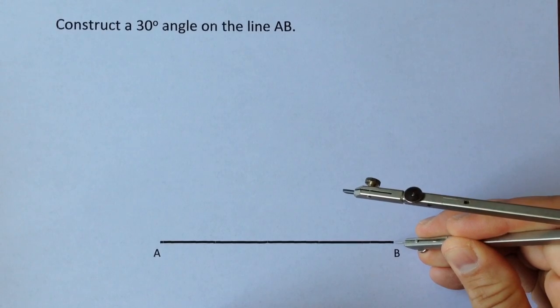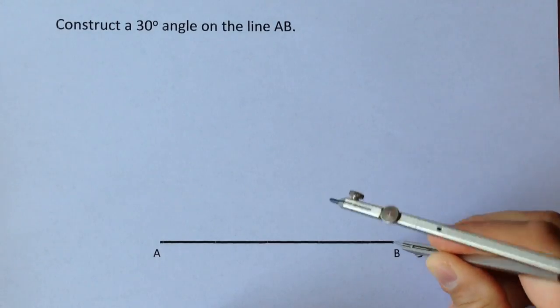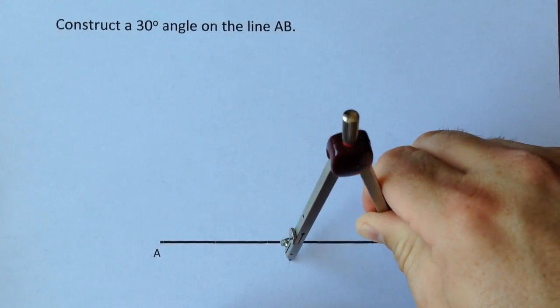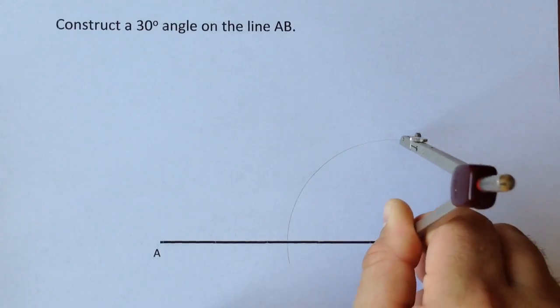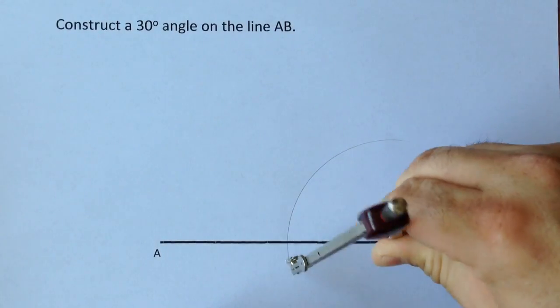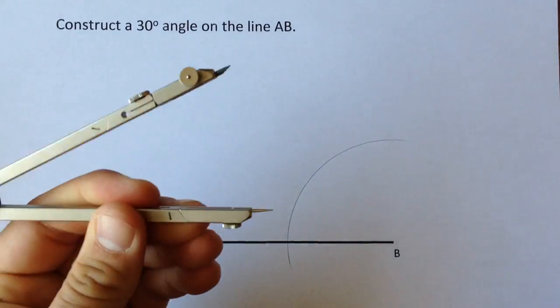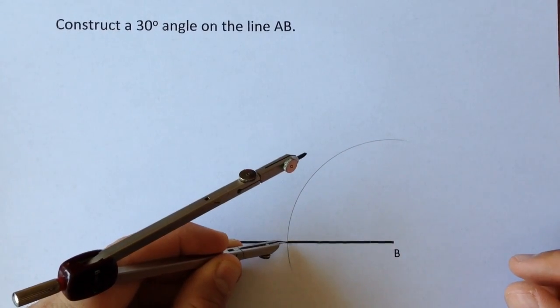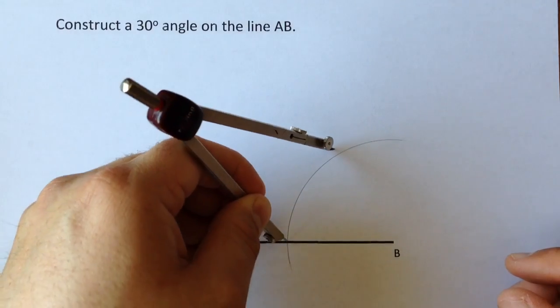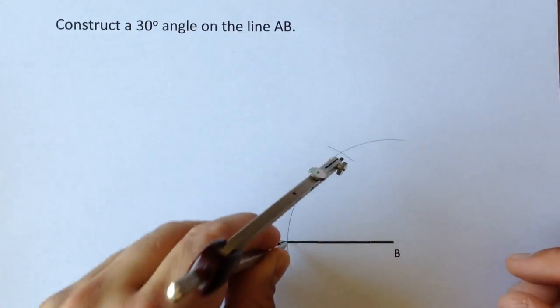So first job, I'm going to construct a 60 degree angle at B. Sharp point on B, draw an arc that goes round, move the sharp point to where the arc crosses the line AB and then just draw a smaller arc at the top there.